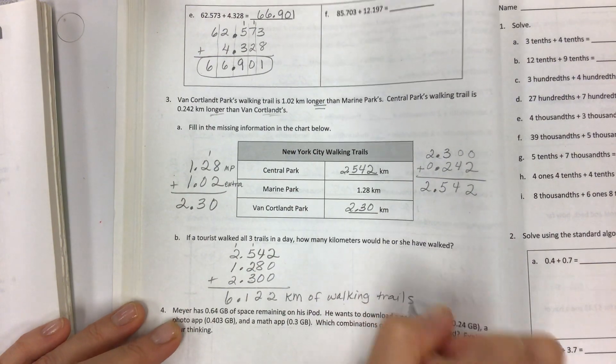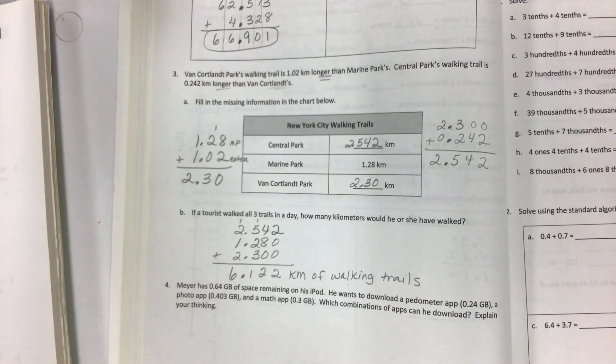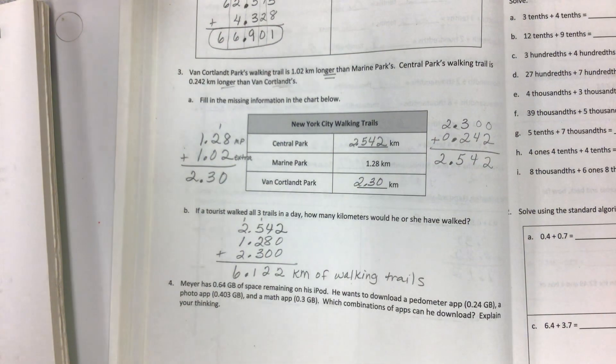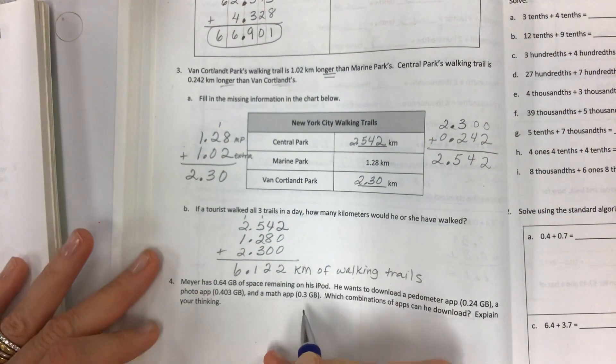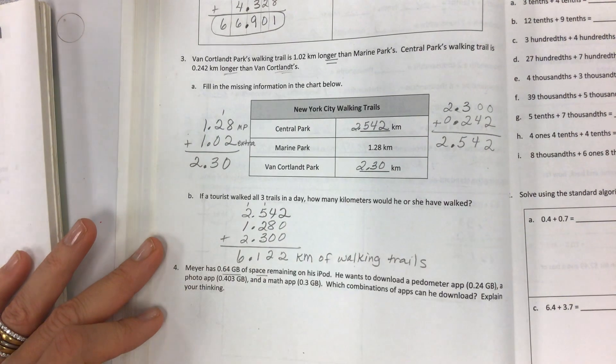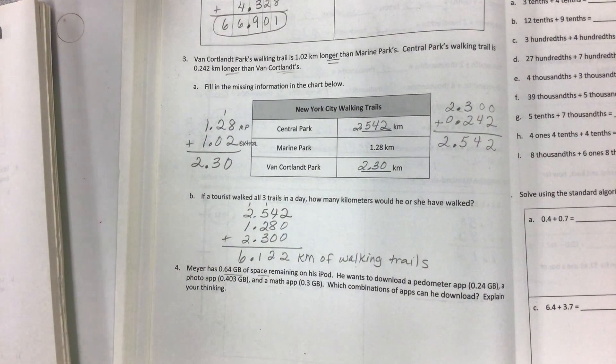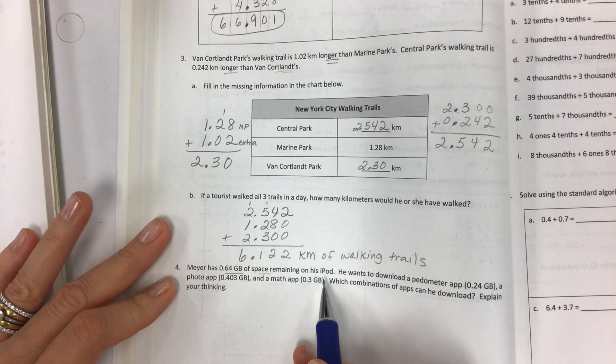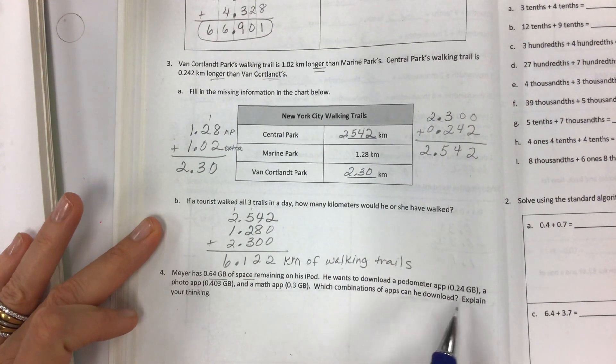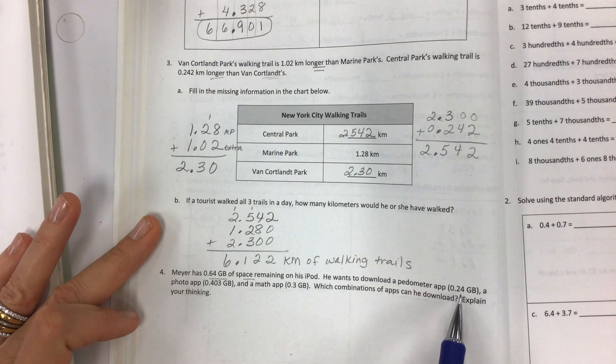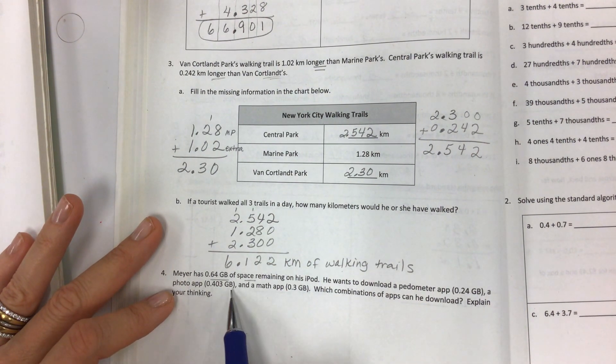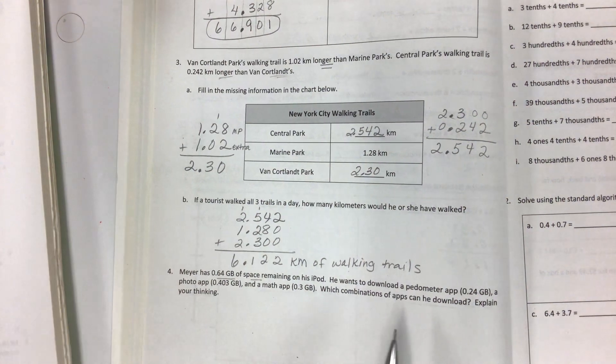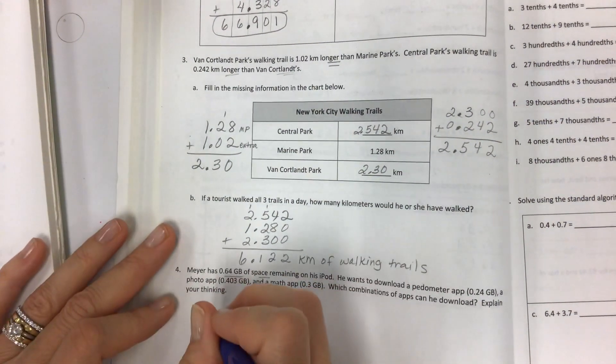The last question is all about space on your iPad or laptop. You guys know that gigabytes of space are really important because you want your equipment to function correctly. Meyer has 0.64 gigabytes of space remaining on his iPod. He wants to download a pedometer app which requires 0.24 gigabytes, a photo app 0.403 gigabytes, and a math app 0.3 gigabytes. Which combinations of apps can he download? Explain your thinking. I'm going to want you guys to work on this on your own.